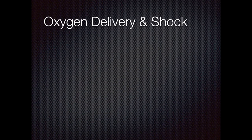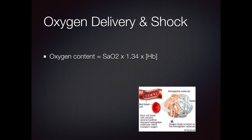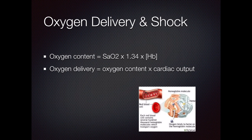Oxygen delivery and shock. The majority of oxygen is transported via hemoglobin through the blood vessels to the cells. Some oxygen is also dissolved in the plasma, but the amount is so minuscule that it is commonly disregarded in the calculations of oxygen delivery. Oxygen capacity is the percentage oxygen saturation times 1.34, which is the oxygen content of 1 gram of saturated hemoglobin times the concentration of hemoglobin. Oxygen delivery is equal to the previously calculated oxygen content multiplied by the cardiac output.